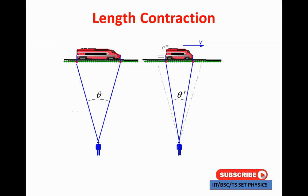If velocity increases, length contraction increases. From the diagram, if a van is moving with velocity v, then according to the observer, the length decreases along its direction. This phenomenon is named length contraction — as velocity increases, the observed length decreases.